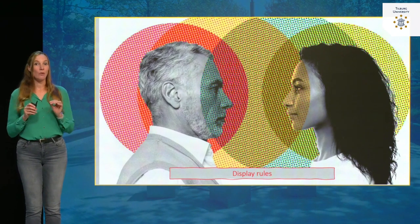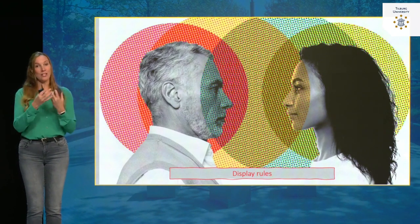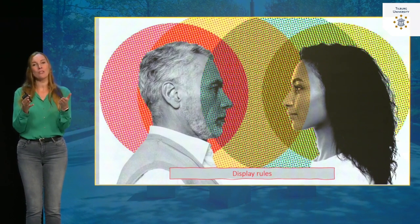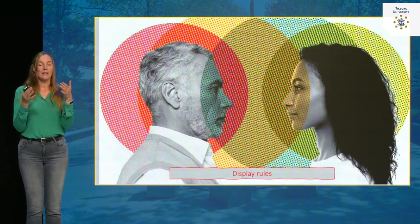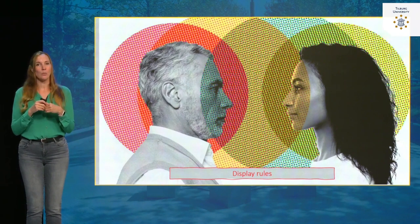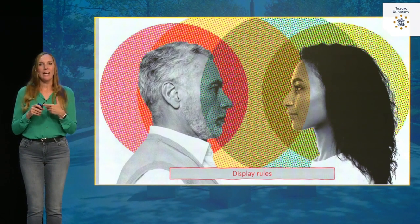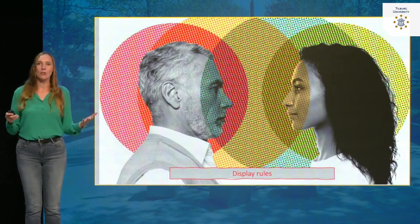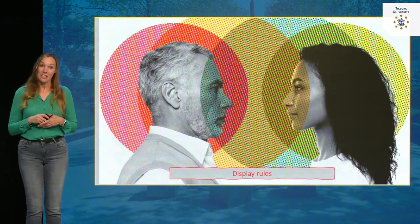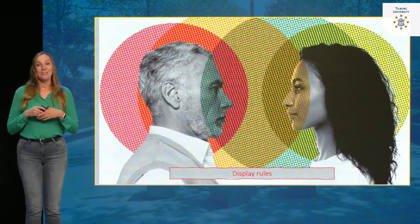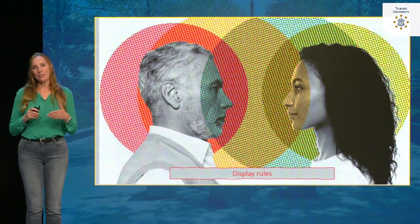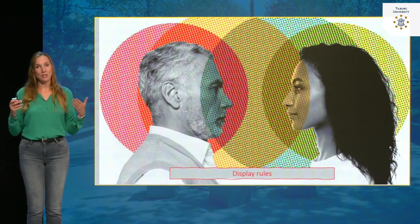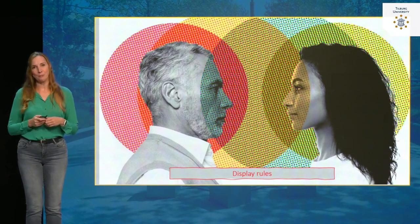So in this part of the lecture, we saw that even before a conversation begins — just by seeing a person — we are already very informed about what that person is like. We form judgments about personality and emotion. In a way, before anything is said, a lot has already been said. In the final part of this lecture, we will see what happens when we actually get to interact with the person.